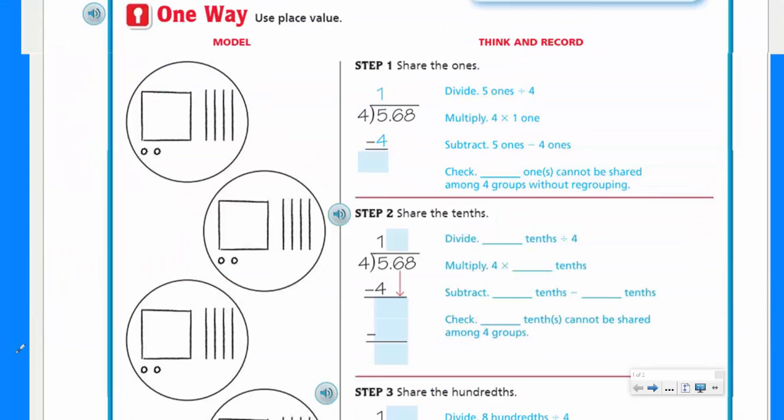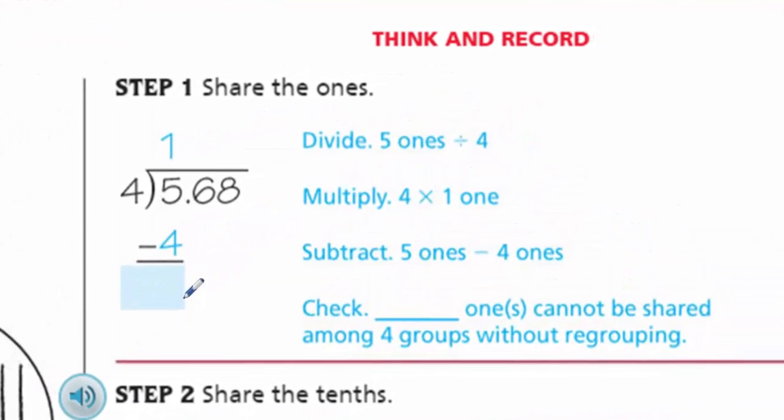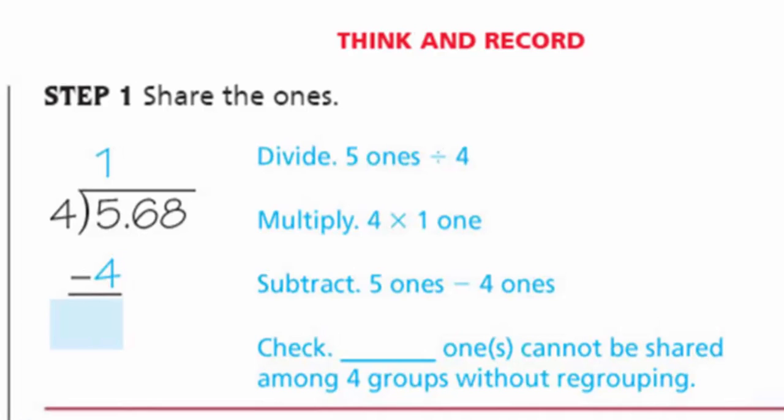Now, it says one way, use place value. Okay, let's follow these steps. So, you have our models on the left-hand side. And it looks like that we have step one. Step one, and it says think and record. Okay, share the ones. Okay, we can do this. Because we have five and 6800 is the five.